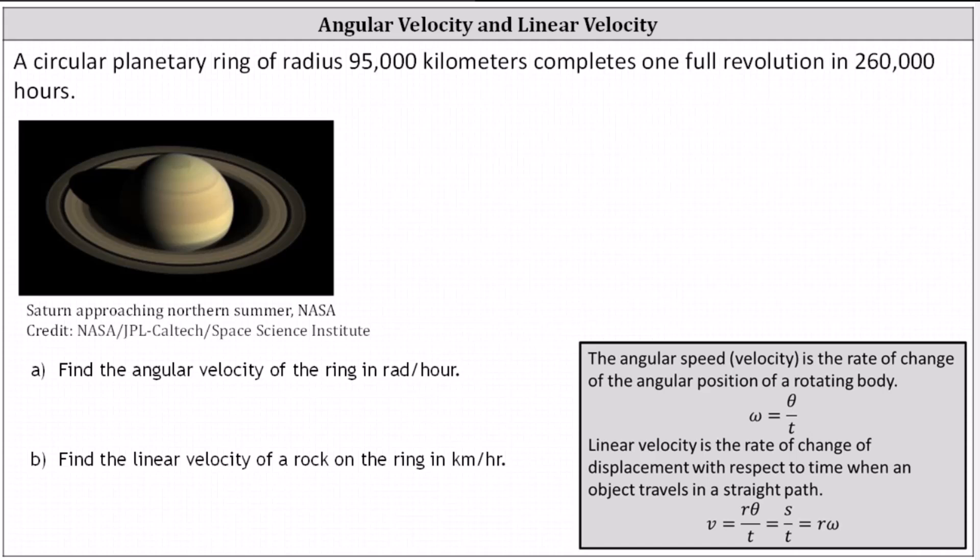A circular planetary ring of radius 95,000 kilometers completes one full revolution in 260,000 hours. Part A: find the angular velocity of the ring in radians per hour. Part B: find the linear velocity of a rock on the ring in kilometers per hour.